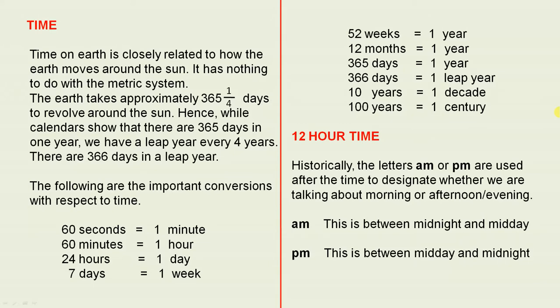The following are the important conversions with respect to time. 60 seconds equal one minute. 60 minutes equal one hour. 24 hours equal one day. 7 days equal one week. 52 weeks equal one year. 12 months equal one year. 365 days equal one year, and 366 days equal one leap year. 10 years equals one decade, and 100 years equals one century.